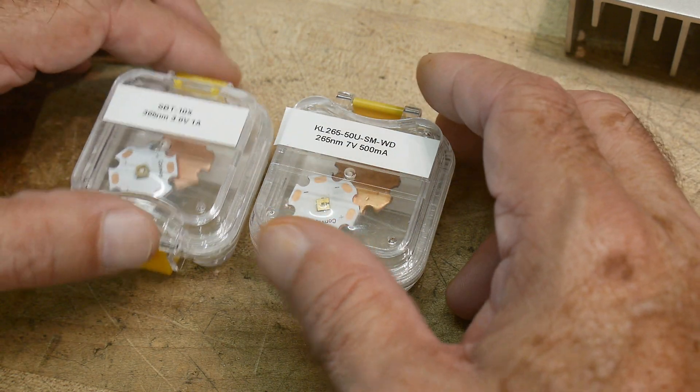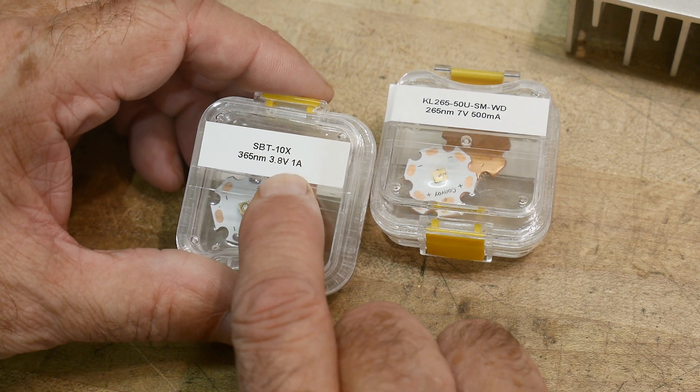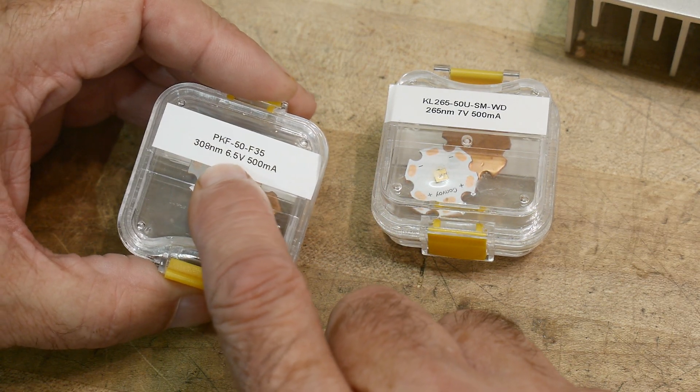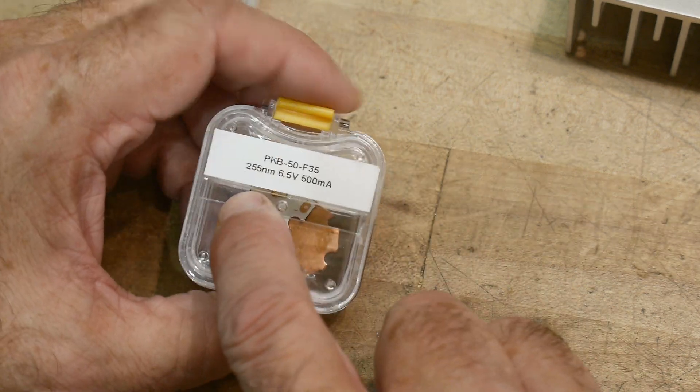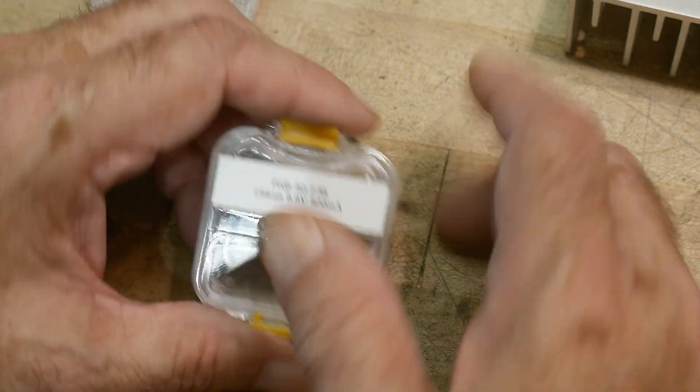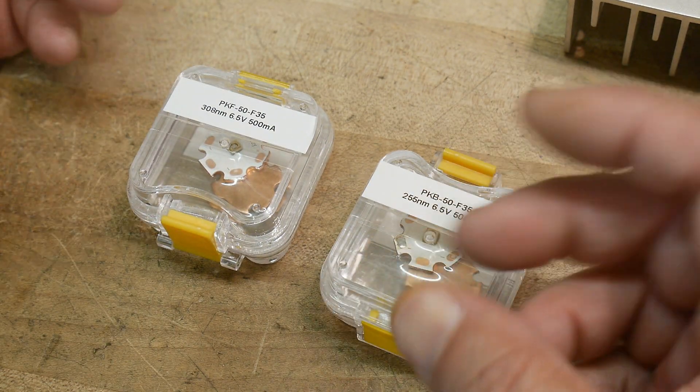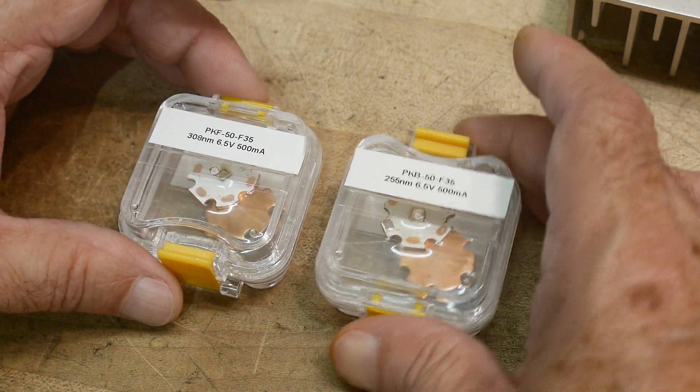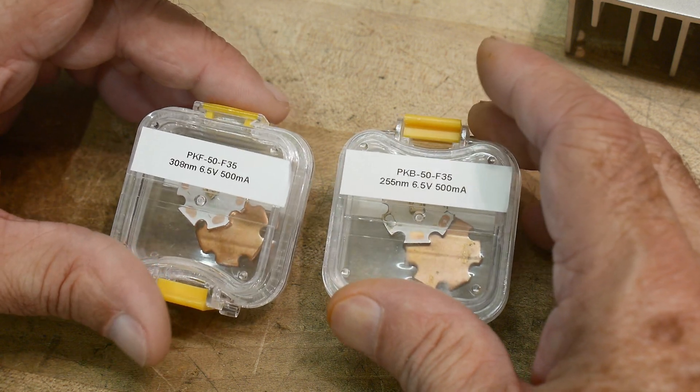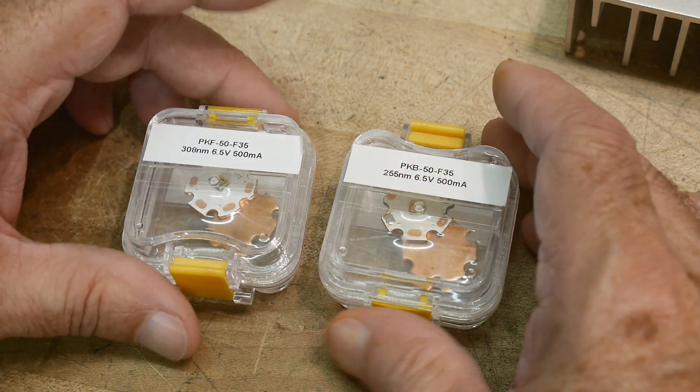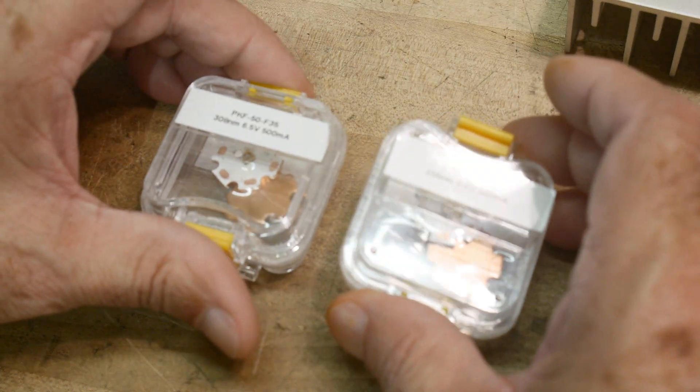He has some of the specs written on the tops of these things, like this one is 3.8 volts at 1 amp, 6.5 volts at half an amp, 7 volts at half an amp, and 6 and a half volts at half an amp. So these are power hungry devices. The efficiency is very low converting electrons into photons. So I'm not going to drive them this hard. I don't need a lot of light out of them. I'll probably drive them maybe at 300 milliamps or something like that. We'll give that a try first.